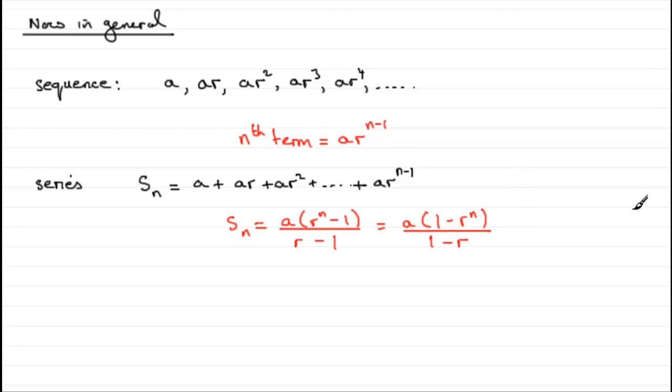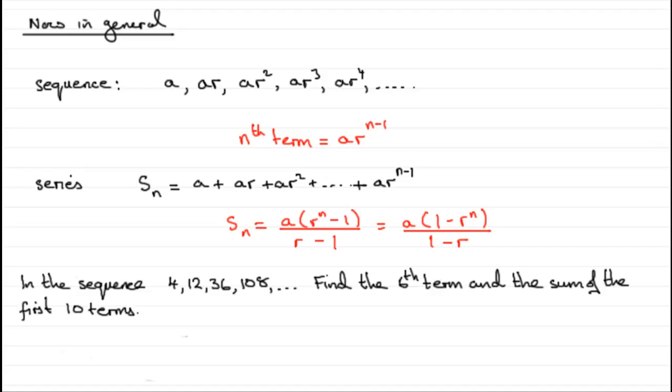Now, I'd like to just do you a quick example on using these two formulas. We've got a sequence, 4, 12, 36, 108, and so on. And we've got to find the sixth term and the sum of the first 10 terms. Now, clearly, this is a geometric progression. You can see that we're multiplying each term by 3.